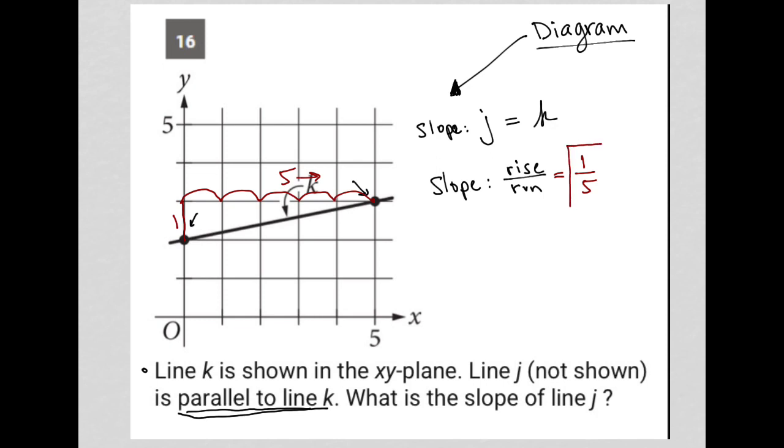And that means the answer to the question: the slope of line J is one fifth. Why? Because one fifth is the slope of line K, and the slope of line K is equal to the slope of line J because both lines are parallel. That's really the thing to remember: when you have parallel lines, you have equal slopes.